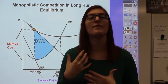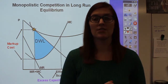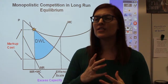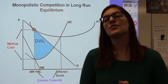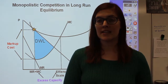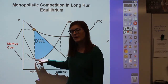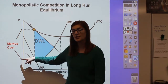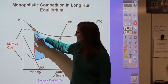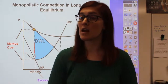We still have average total cost, and we still have the marginal cost curve intersecting at the minimum of average total cost. Although this is monopolistic competition in long-run equilibrium — similar to perfect competition in long-run equilibrium — it is not at the same point. To determine profit maximizing quantity and price, we use marginal revenue equals marginal cost to find the quantity, then go up to where that hits the demand curve to determine the selling price.